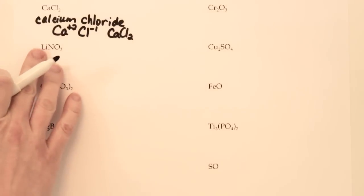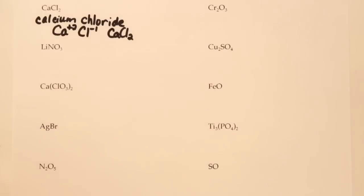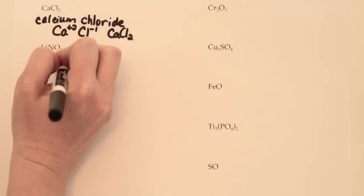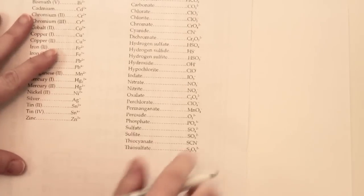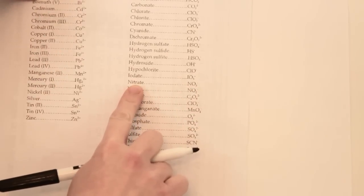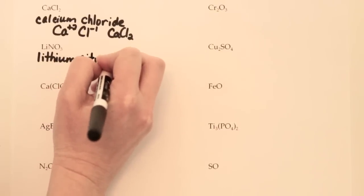For LiNO₃, Li is in the first column on the periodic table so all we have to do is write what Li is called: lithium. Now for the nonmetal portion — it's made up of more than one type of element. We've got nitrogen and oxygen, so we look up what NO₃ is called on the charge sheet. NO₃ is called nitrate, so the name of this compound is lithium nitrate.